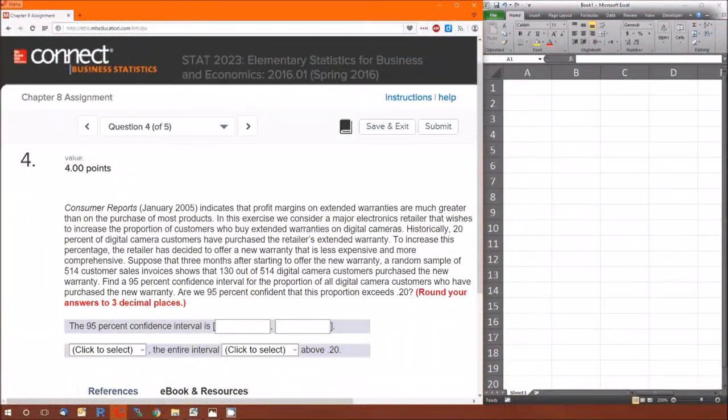Hello and welcome to chapter 8. We're going to look at problems number 4 and 5. These both deal with proportions. Problem 4 deals with confidence intervals with proportions. Number 5 deals with calculating minimum sample size with proportions. So let's begin.